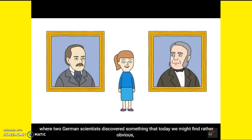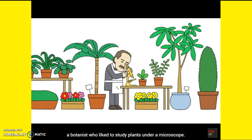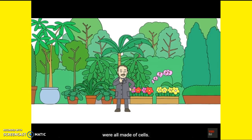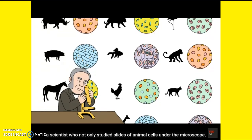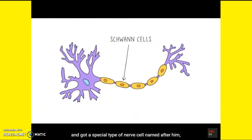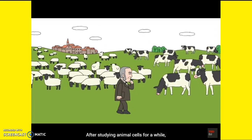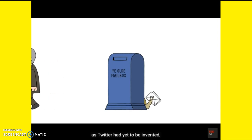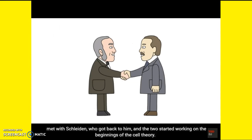Fast forward to the 1800s, where two German scientists discovered something that today we might find rather obvious, but helped tie together what we now know as the cell theory. The first scientist was Matthias Schleiden, a botanist who liked to study plants under a microscope. From his years of studying different plant species, it finally dawned on him that every single plant he had looked at was made of cells. At the same time, on the other end of Germany, was Theodor Schwann — a scientist who studied slides of animal cells under the microscope, had a special type of nerve cell named after him, and also invented rebreathers for firefighters. After studying animal cells, he too came to the conclusion that all animals were made of cells. He reached out to other scientists, and it was Schleiden who got back to him — and the two started working on the beginnings of the cell theory.